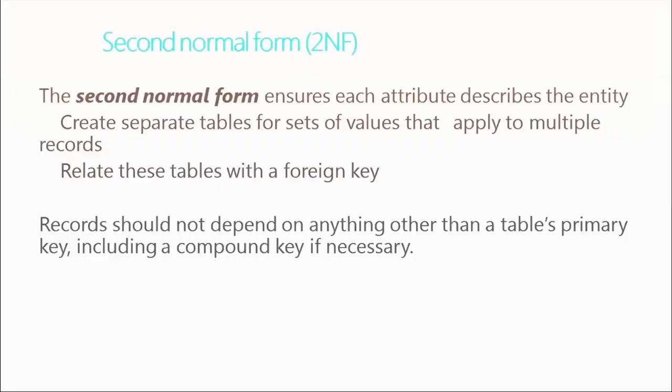Our second normal form ensures each attribute or column describes the entity. If we go back to our CD example, we want every column to be directly associated with that CD. We're going to tie tables together using a foreign key. Records should not depend on anything other than the primary key in that table. We can also create what are called composite keys — in order to make something unique, I may have to use multiple columns to ensure uniqueness in those rows.